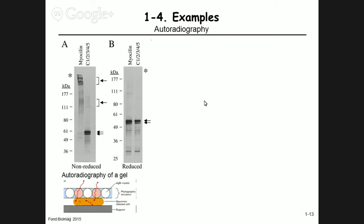To finish with some examples: autoradiography, or self-radiography, involves taking a substance like a protein, labeling it with a radioactive marker, and running it through a gel where the protein migrates. Using the radioactive markers, you can determine the molecular weight of the protein — for example, proteins around 55 kilodaltons or 61 kilodaltons. This is also a form of imaging, applied to a gel.